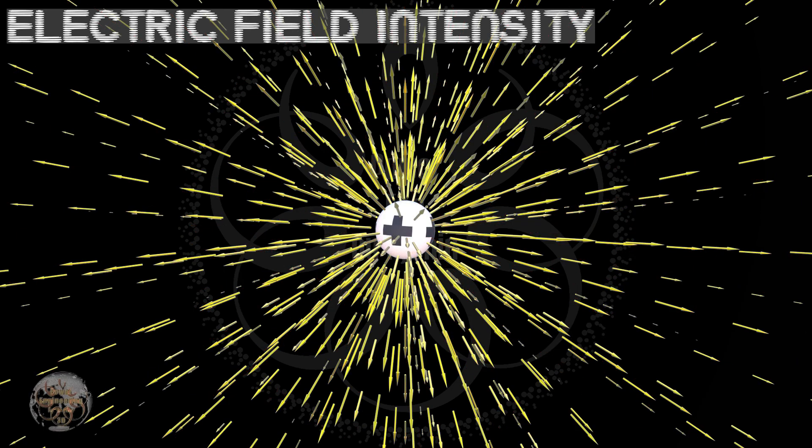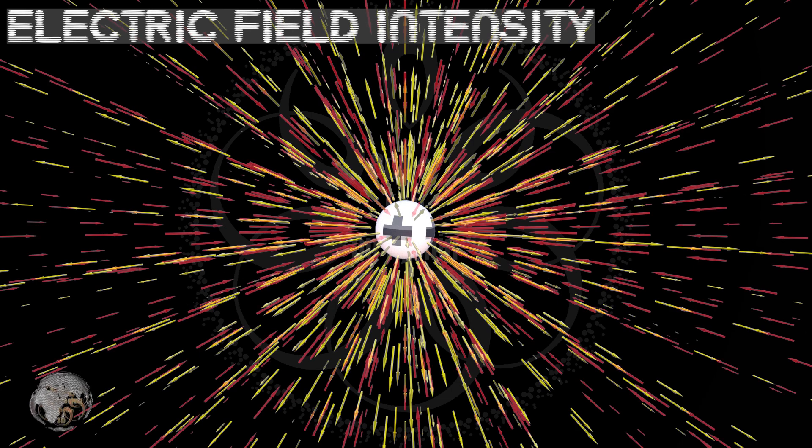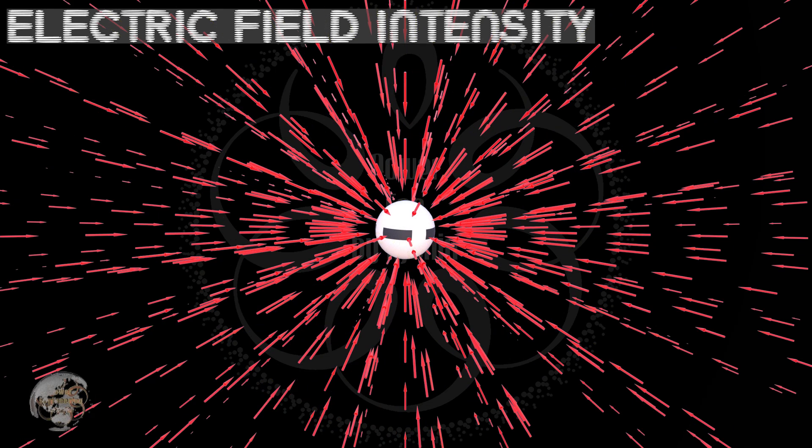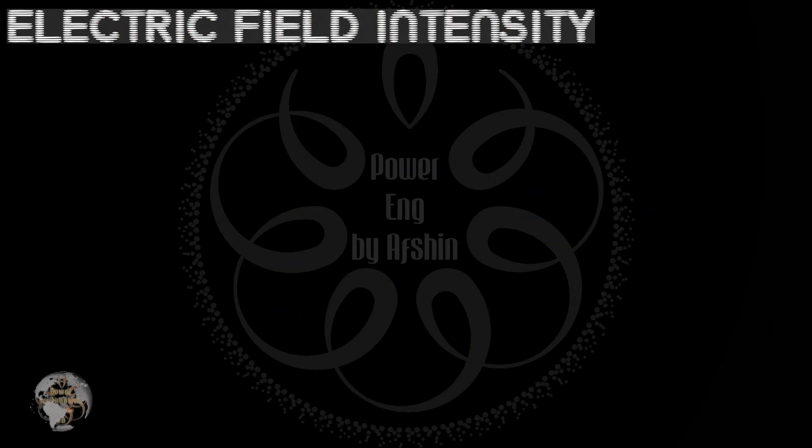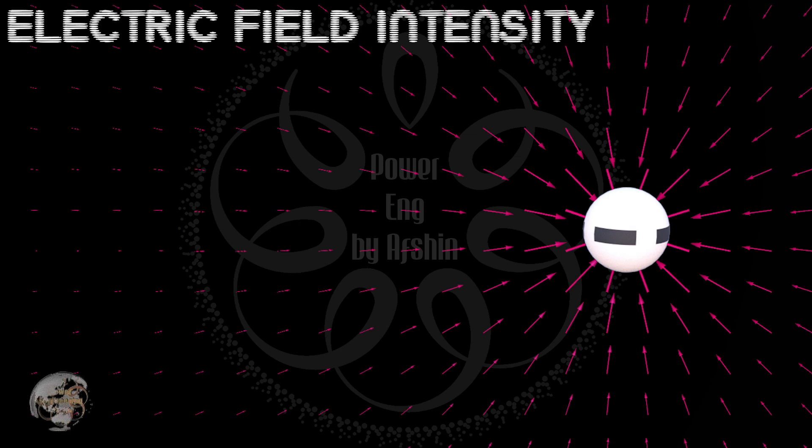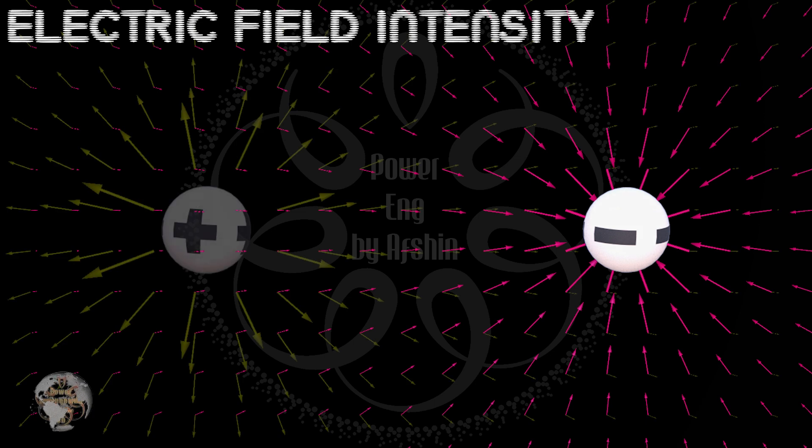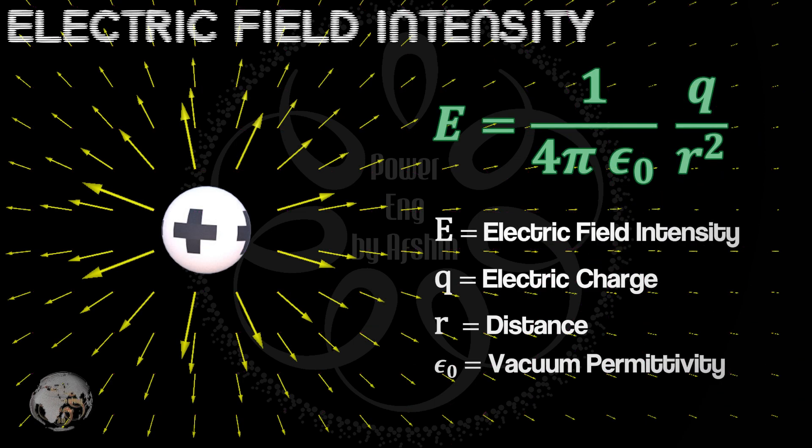Electric field lines emanate from the positive charge and enter the negative charge. To make the field lines more visible, they are drawn in a two-dimensional space. As shown on the screen, the electric field vectors around positive and negative charges clearly demonstrate the direction and strength of the field.